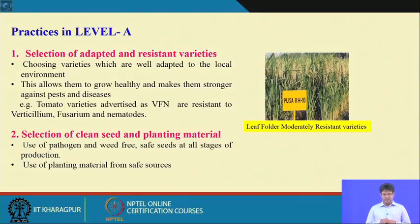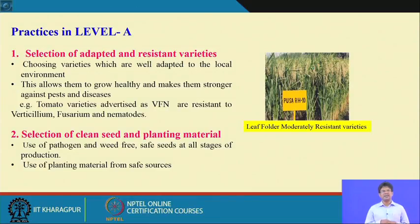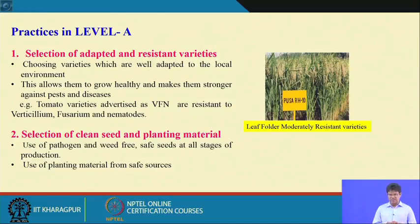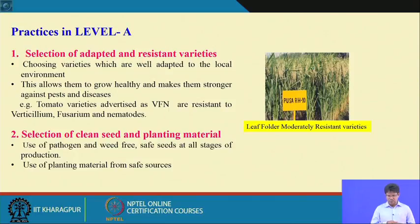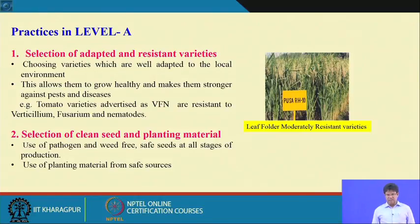The first Level A practice is selection of adapted and resistant varieties. In organic farming, we choose varieties well-adapted to local environments, which makes them stronger against pest and disease. For example, tomato variety VFN is resistant to Verticillium, Fusarium, and nematodes. Such resistant varieties should be used in organic farming in areas prevalent for particular pests and diseases.